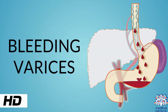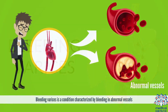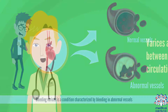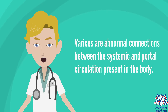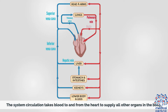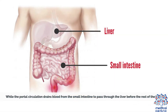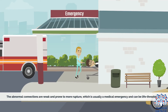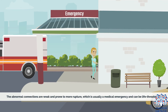Today's topic is bleeding varices. Bleeding varices is a condition characterized by bleeding in abnormal vessels. Varices are abnormal connections between the systemic and portal circulation present in the body. The systemic circulation takes blood to and from the heart to supply all other organs in the body, while the portal circulation drains blood from the small intestine to pass through the liver before the rest of the body. The abnormal connections are weak and prone to rupture, which is usually a medical emergency and can be life-threatening.